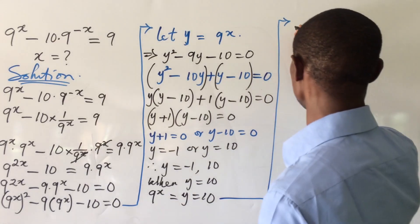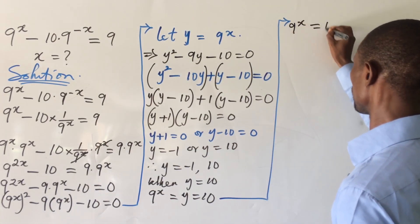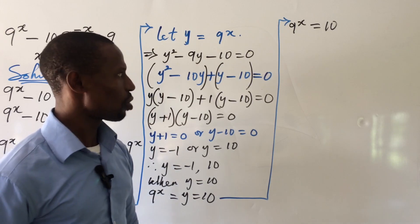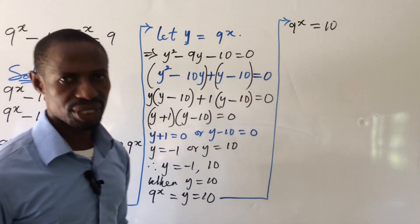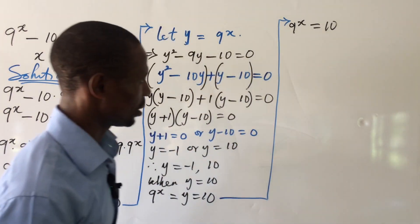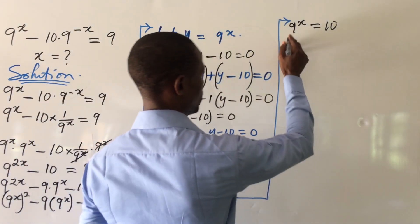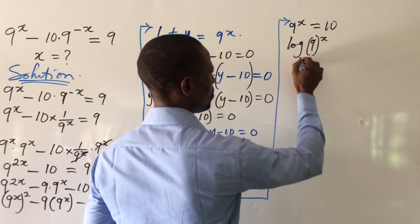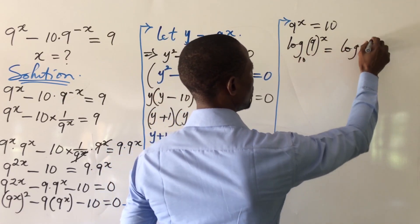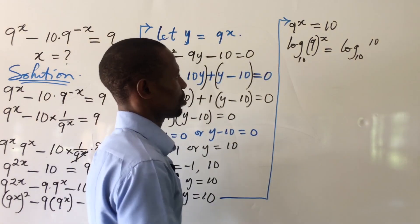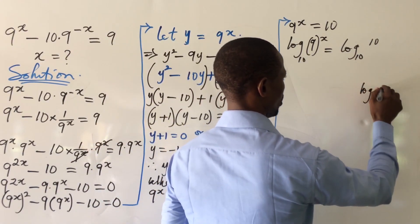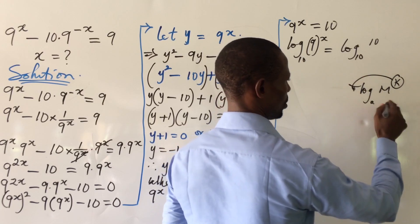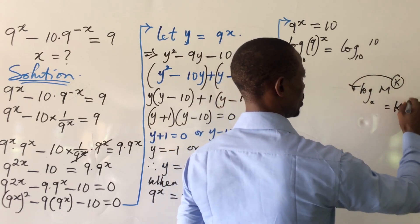For 9^x equals 10, there's no integer power of 9 that gives 10 directly. So we take log base 10 of both sides: log(9^x) base 10 equals log(10) base 10. According to the law of logarithms, log(m^k) base a equals k times log(m) base a, so we move the exponent x to the front.